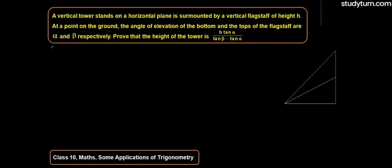Hello students, today we will be solving a problem of class 10 mathematics chapter some applications of trigonometry. The question says that a vertical tower stands on a horizontal plane is surmounted by a vertical flagstaff of height h. At a point on the ground, the angle of elevation of the bottom and the top of the flagstaff are alpha and beta respectively. Prove that the height of the tower is h tan alpha upon tan beta minus tan alpha.